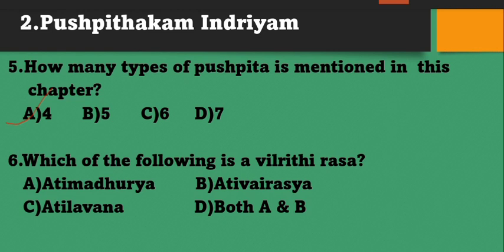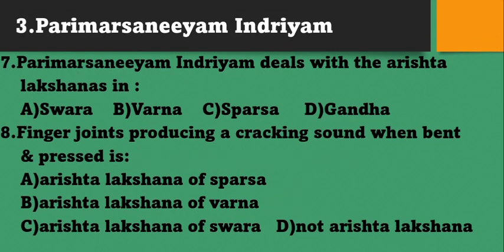Which of the following is a Vigridhika Rasa? Options: A) Adhi Mahadurya; B) Adhi Vairasya; C) Adhi Lavana; D) Both A and B. Vigridhi Rasa is both A and B: Adhi Mahadurya and Adhi Vairasya.